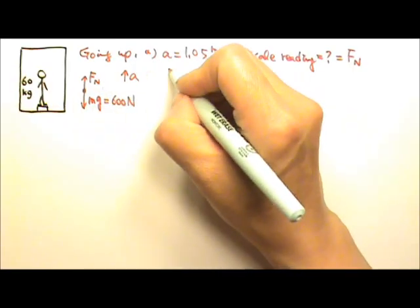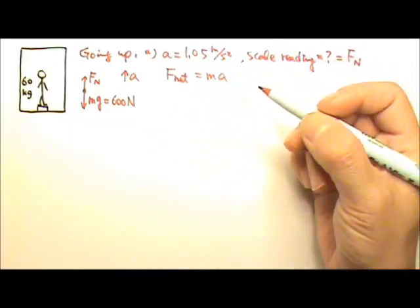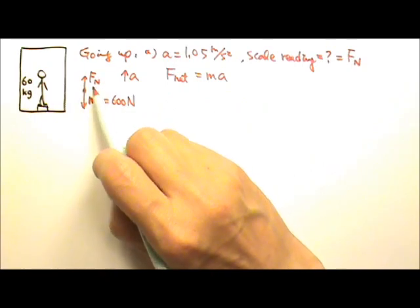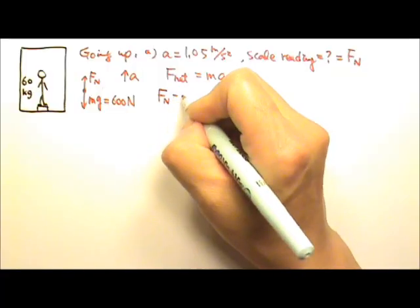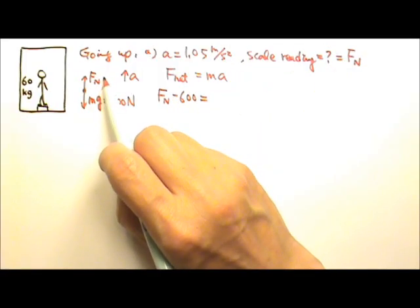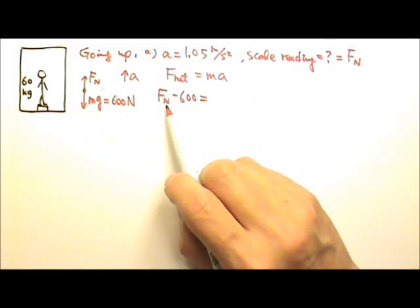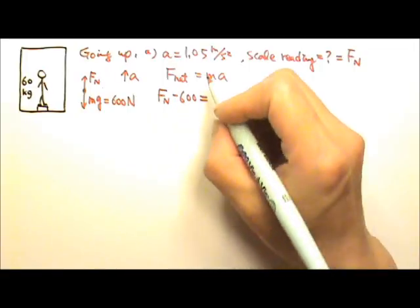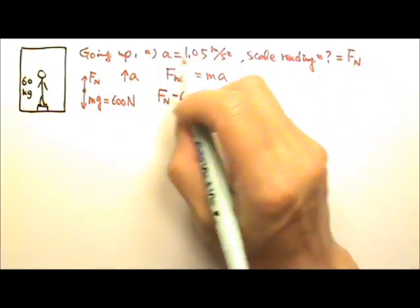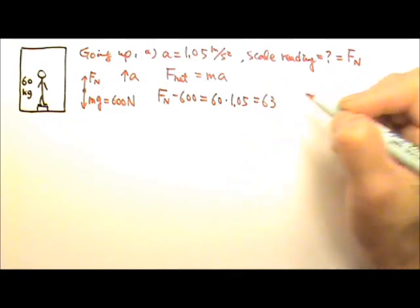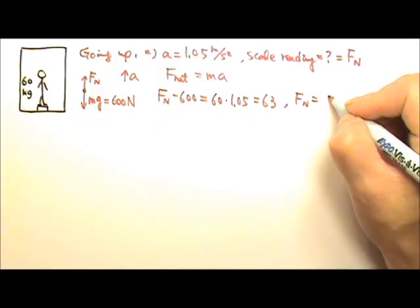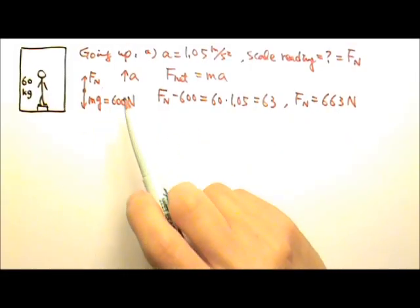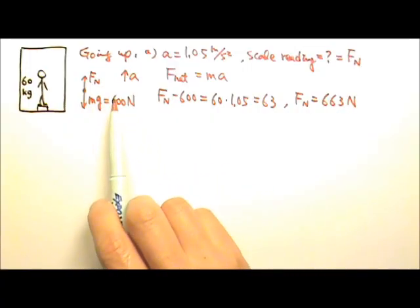We're done with the force diagram, so let's write the force equation. Net force equals ma. Since the acceleration goes up, the upward force must be bigger than the downward force. We do the bigger side minus the smaller side: normal force minus 600 newtons equals m times a. That's 60 kilograms times 1.05, which gives 63. So the normal force is 663 newtons — larger than the weight of the person.